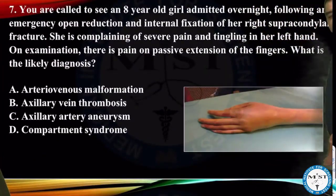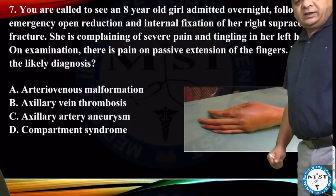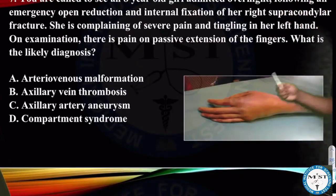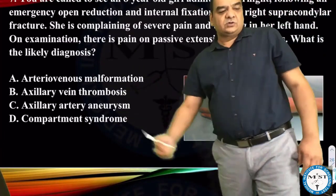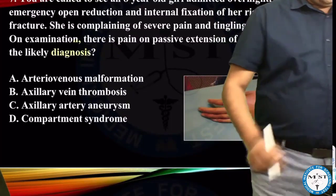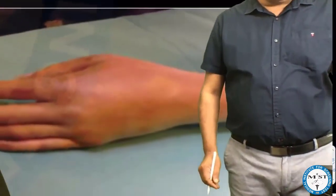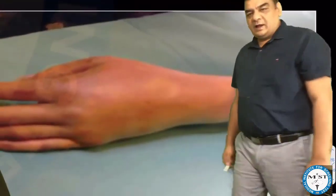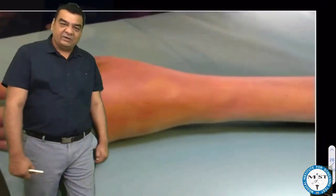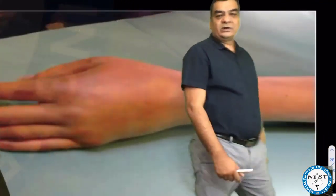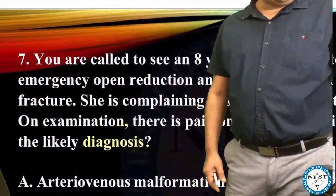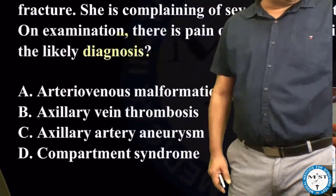Looking at the last line of the question - what is the likely diagnosis? The examiner is asking about the diagnosis in this patient and looking at the image. I am not able to make any diagnosis looking at this image, so I don't know what the examiner is talking about. I have to look at the options quickly.